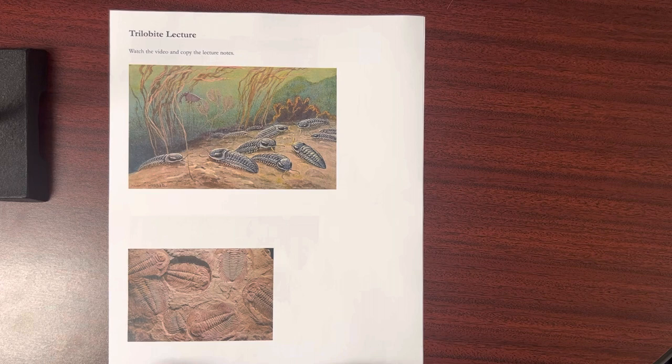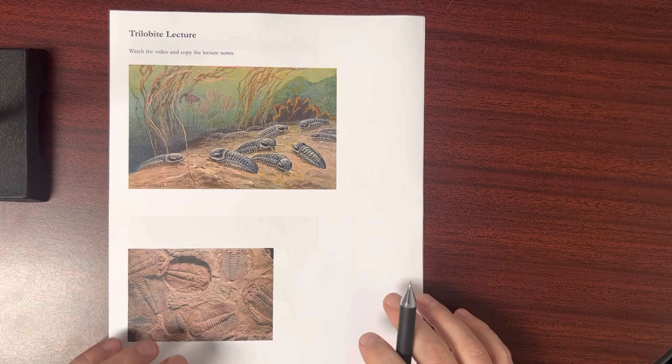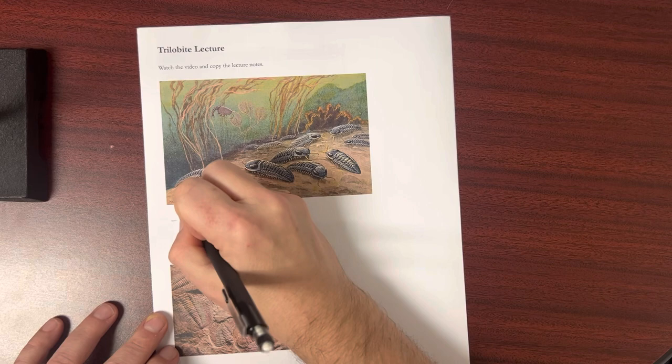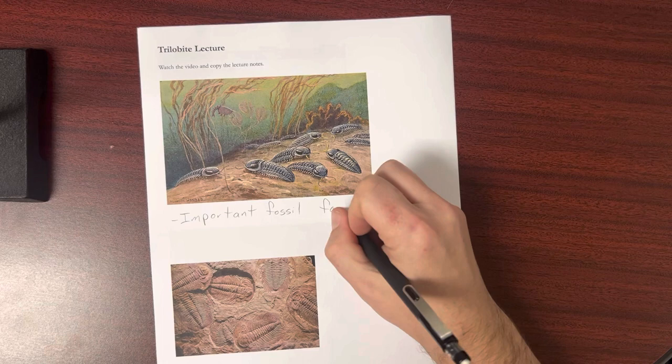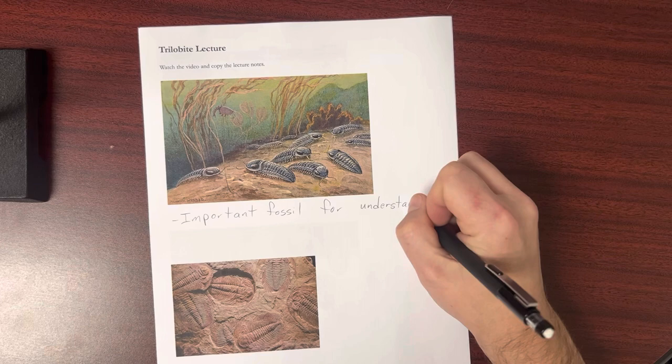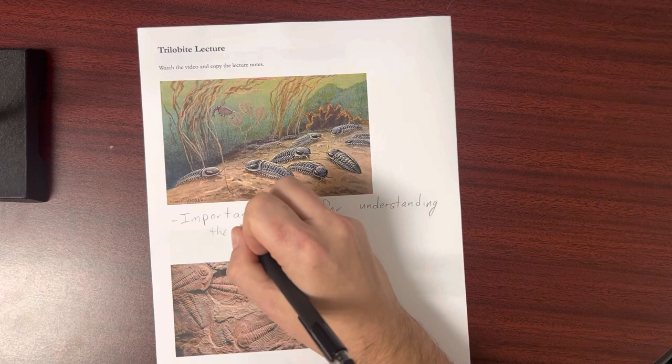Good morning. Today we're going to talk about trilobites and their history on Earth. And eventually what we want to get into in this unit is how do we know so much about trilobites. Trilobites are one of the more important fossils that we find in the fossil record. And they help us to understand what was going on in Earth's past.